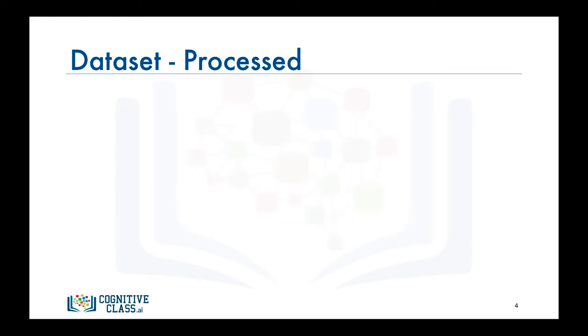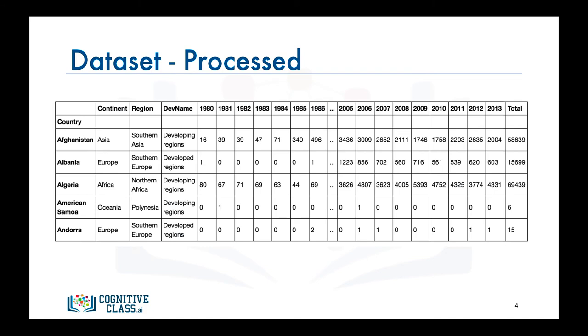Now let's process the data frame so that the country name becomes the index of each row. This should make worrying specific countries easier.